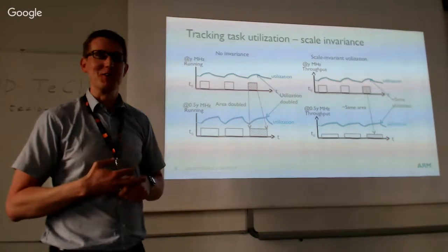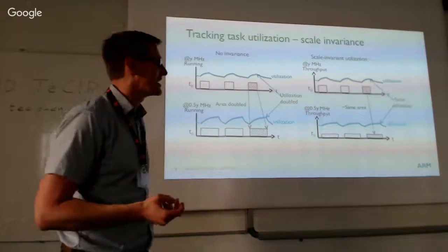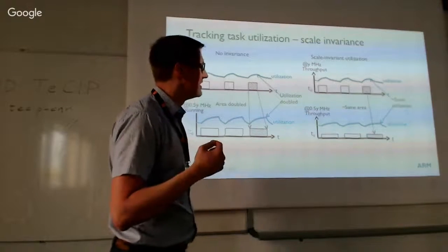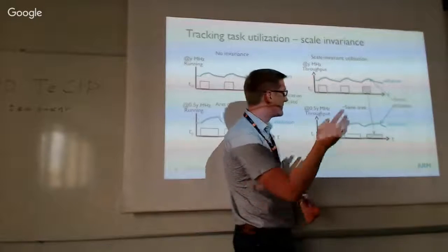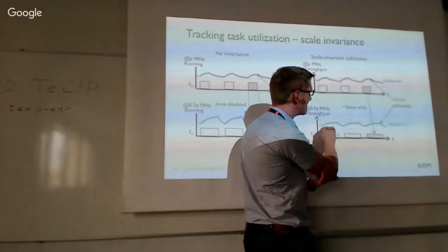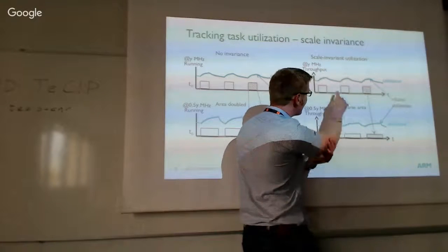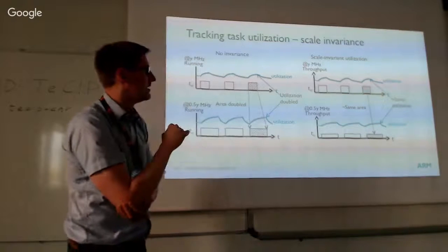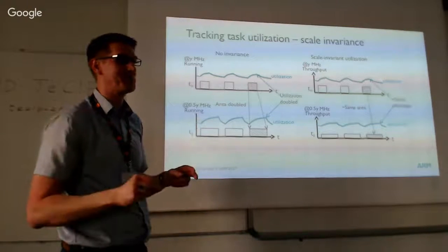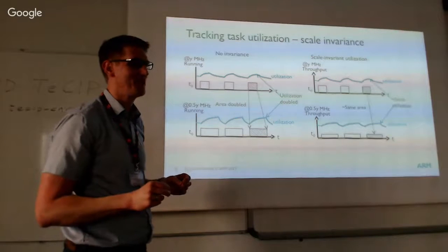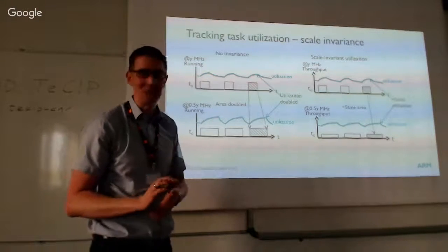We're working on the idea that anything is better than nothing — which isn't always the case, but we hope it is here. The idea is that PELT ramps up slower when you're running slower, so the actual utilization value is the same regardless of frequency. That's our measure of task size — it's very naive, but it's the best we can do right now.